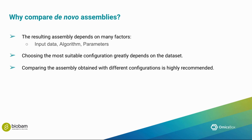Why compare de novo assemblies? The resulting assembly depends on many factors. First, the input data used — whether you used single-end reads, paired-end reads, or additional data like mate pairs or long reads. Not only this, but the chosen algorithm will have a really high impact on the results, and not only the algorithm but the parameters used will lead to different results as well. Choosing the most suitable configuration can be tricky and it really depends on the dataset — there's no one-solution-fits-all here.